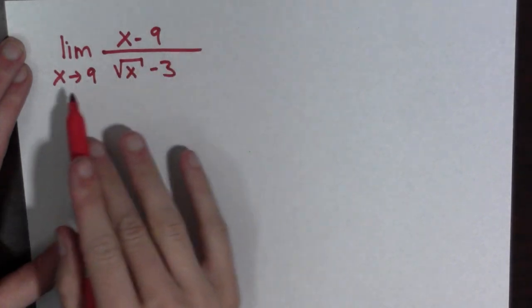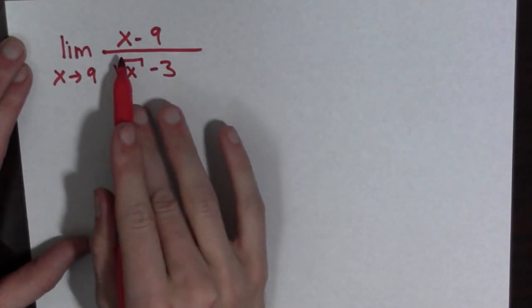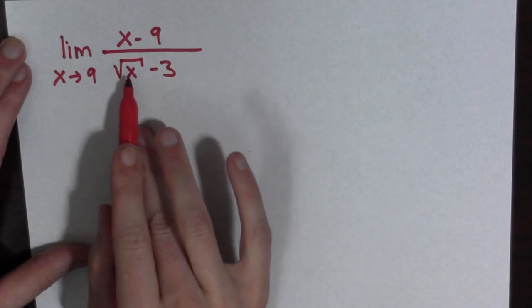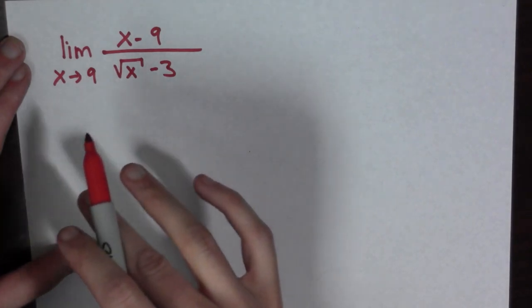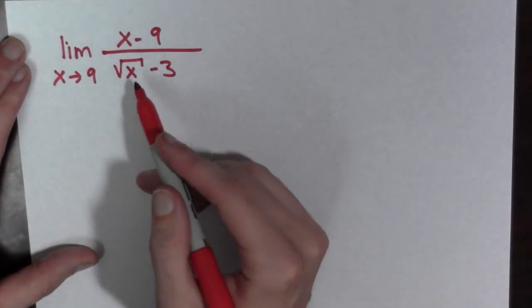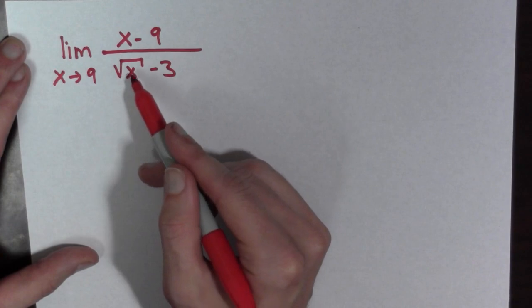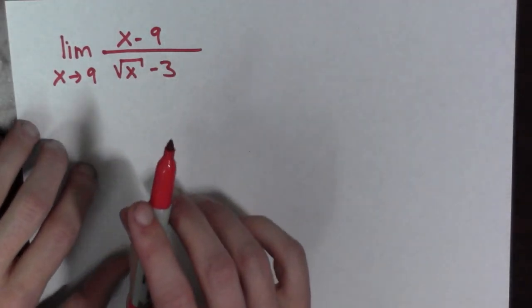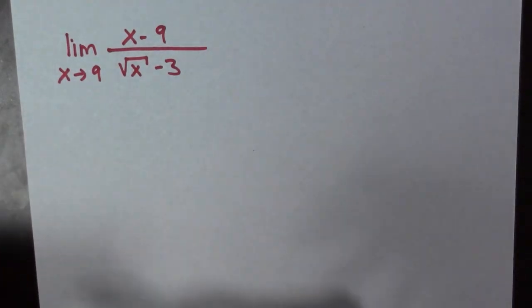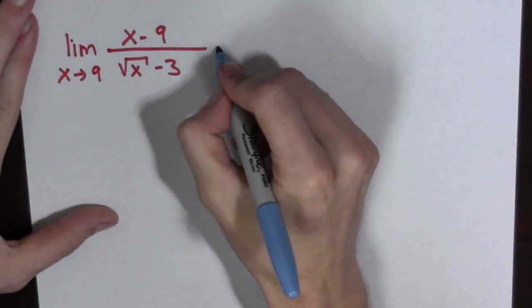Let's do another example. We wish to take the limit as x goes to 9 of x minus 9, all over the square root of x minus 3. While we would like to plug in 9 for x, we cannot because if we plug in 9 we get the square root of 9, which is 3, giving 3 minus 3 in the denominator, which is 0 — that's no good. In this case we rationalize the denominator by multiplying by the conjugate.